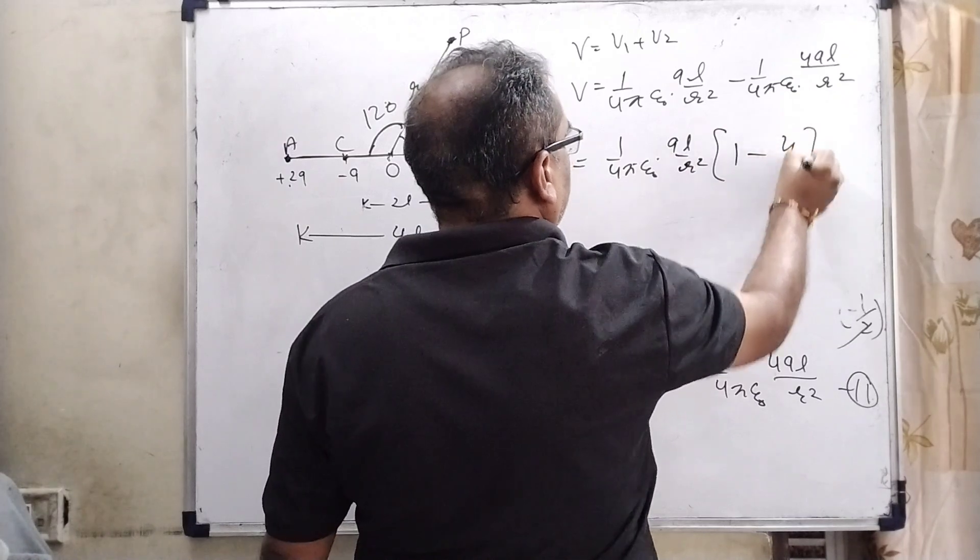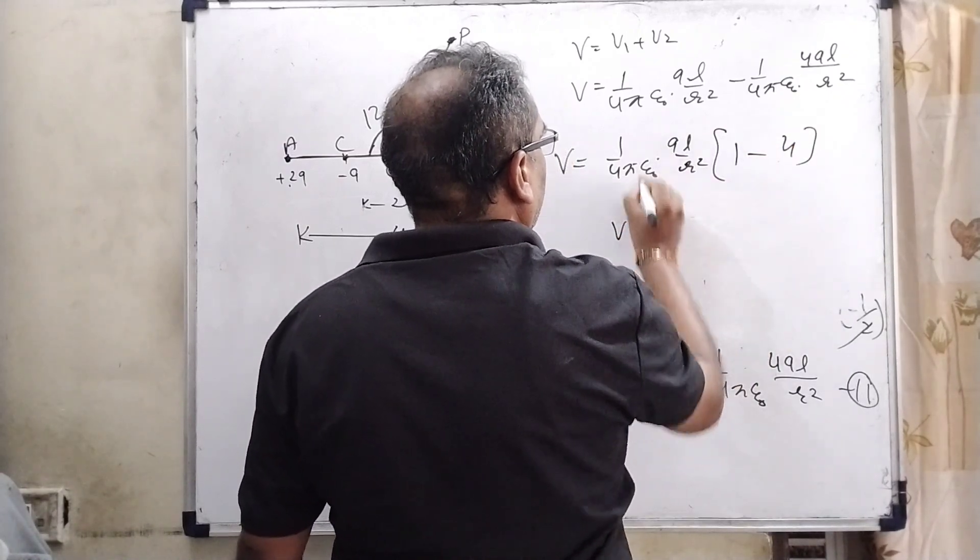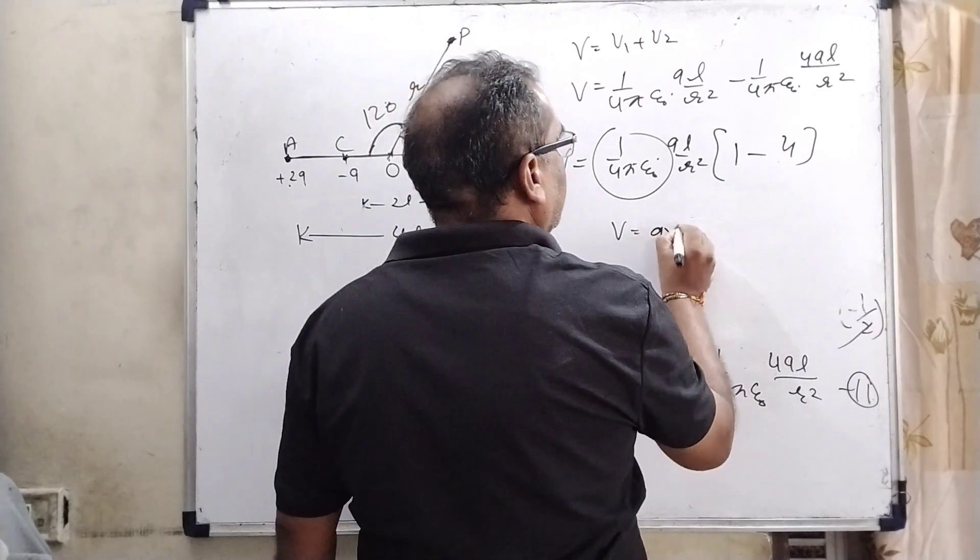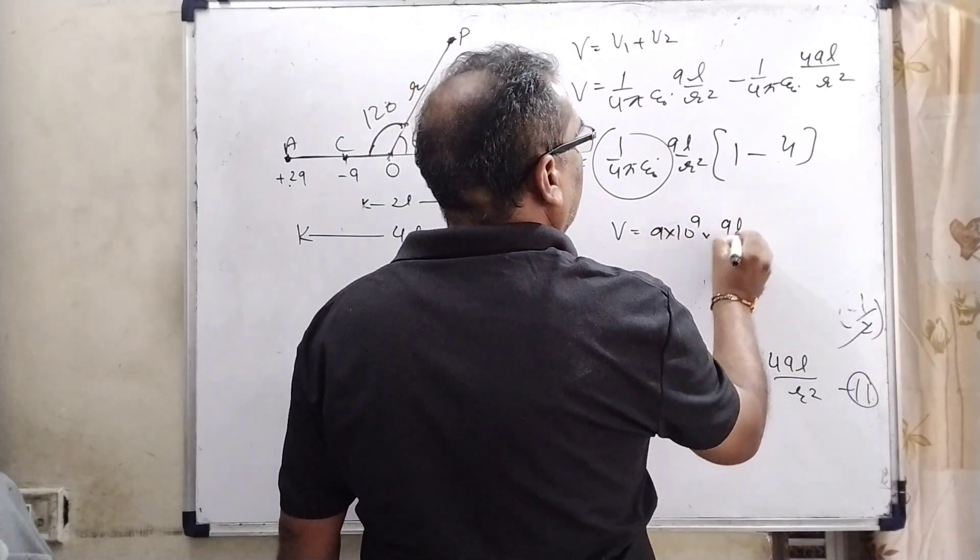So, here 1 upon 4 pi epsilon 0 QL by R square making common. So, here 1 minus 4. So, V and this value is given in the question that is 9 into 10 to the power 9.